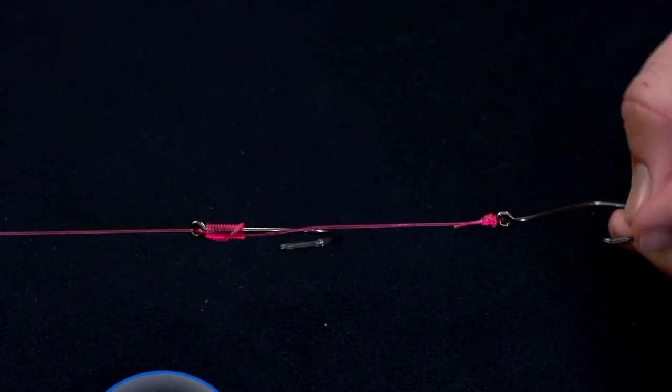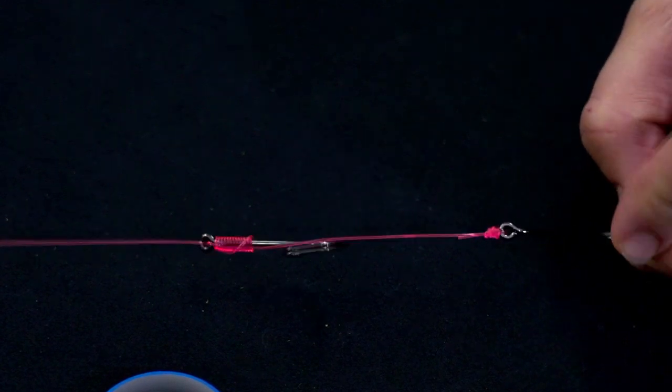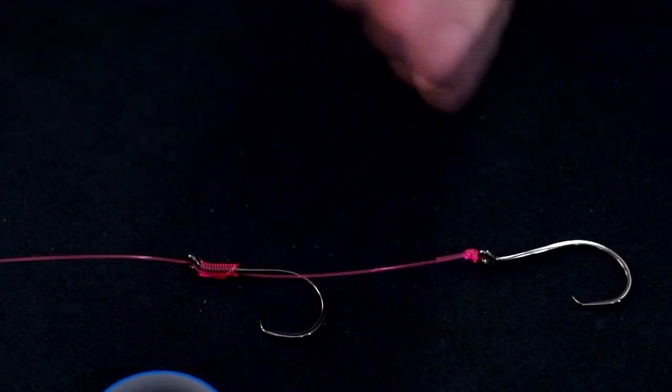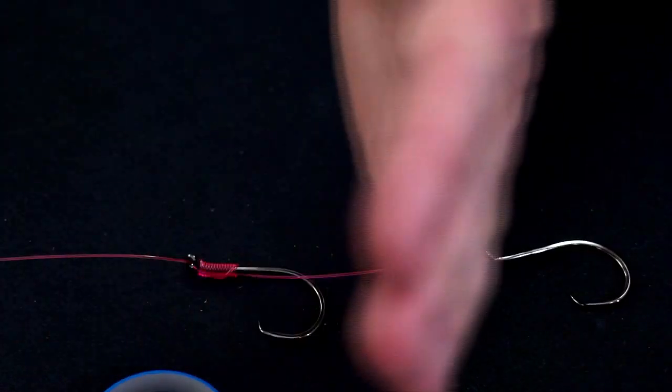Now I've got my main hook snelled for the line, second hook tied, and that is just ideal when it comes to rigging baits, when you want them to sit in the current beautifully and get great bait presentation.